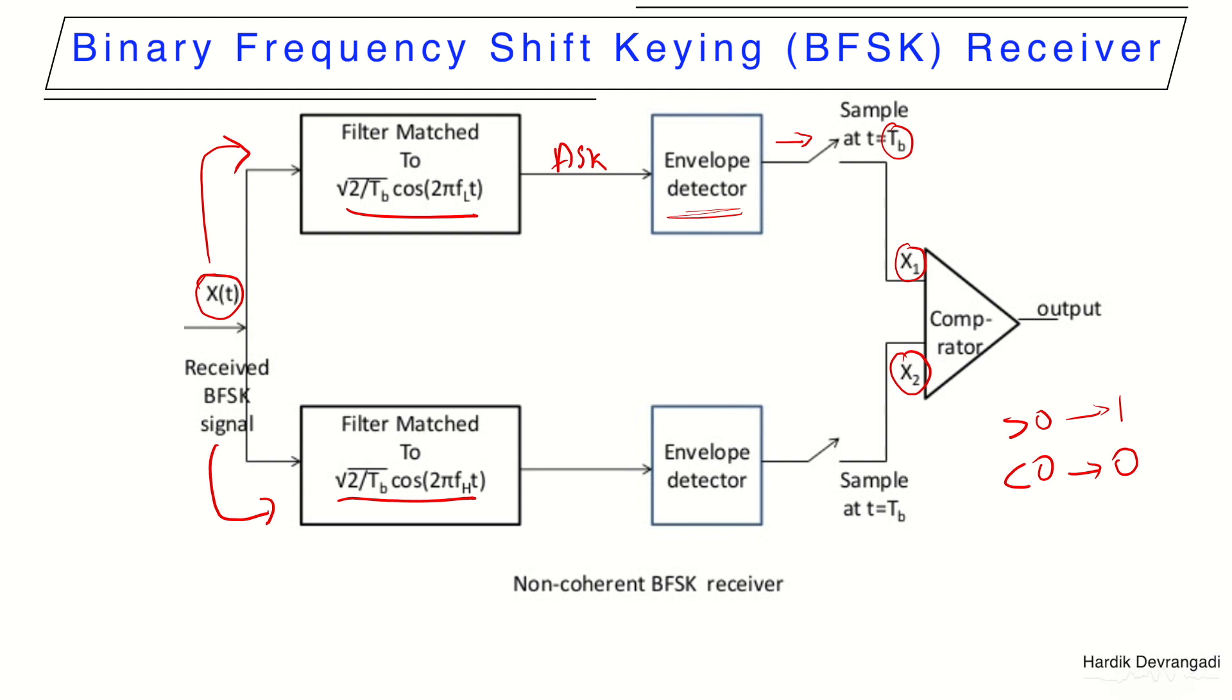For a coherent detection scheme, a correlator is used instead of these components. The correlator consists of two components: a multiplier and an accumulator. The multiplier multiplies the incoming signal with the basis function and the signal is passed on to the accumulator. The outputs of the two accumulators is then given to a comparator followed by a decision device.